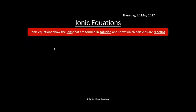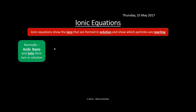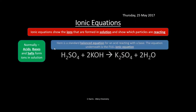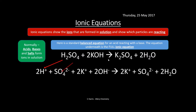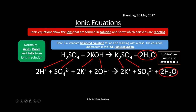Ionic equations show the ions formed in solution and which particles are reacting. Typically these involve acids, bases, and salts. Starting from a standard balanced equation — for example an acid reacting with a base — we split the acids, bases, and salts into their ions to produce the full ionic equation. Water isn't an ion so we leave it as it is. Here we get 2H⁺, SO₄²⁻, 2K⁺, and 2OH⁻ on the respective sides.